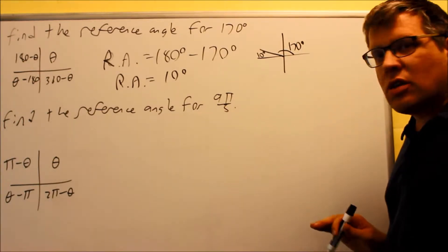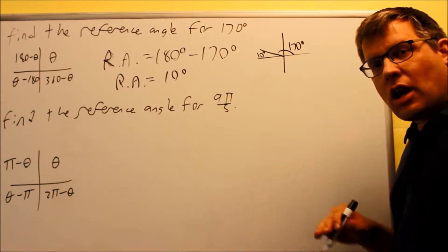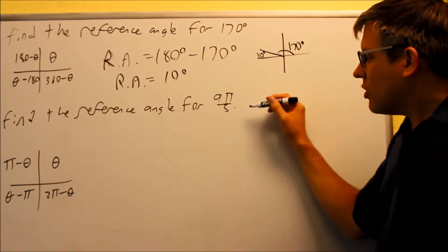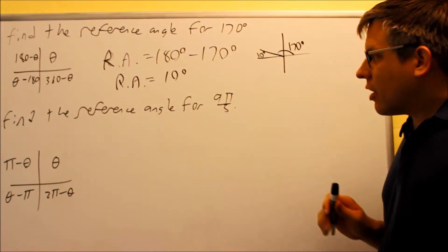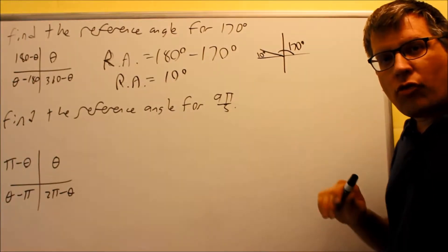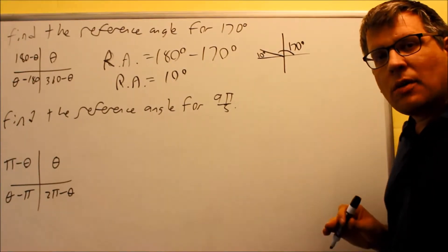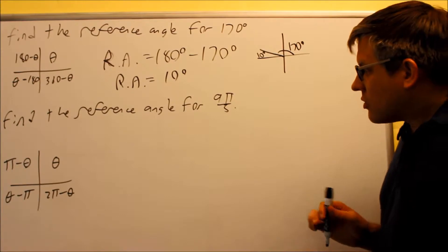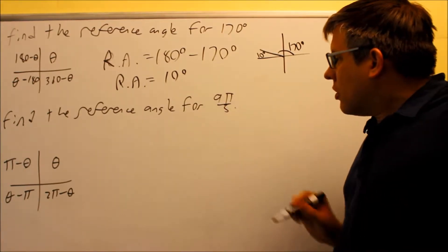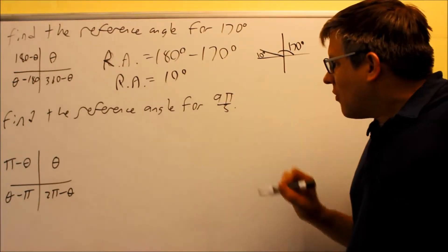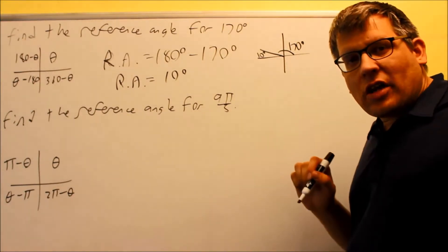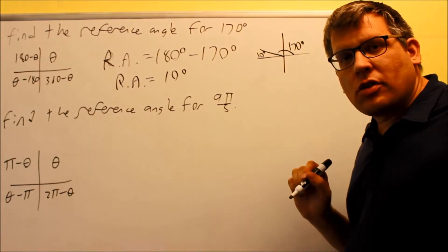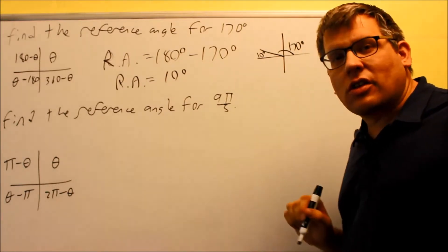Now for this one, this one's going to be in radians. And yes, you could actually convert this over into degrees and then use that same chart there in order to find the correct reference angle formula. However, I'm going to keep this one in terms of radians. If we think about the number 9 fifths, 9 fifths, by looking at that, that's slightly less than 2. 10 fifths would be 2, so 9 fifths is just slightly less than that.